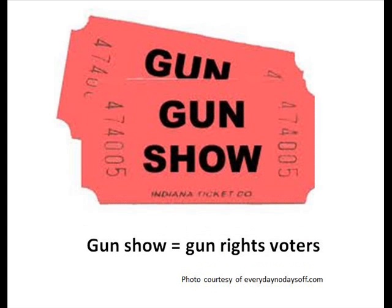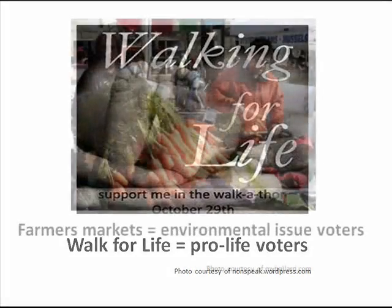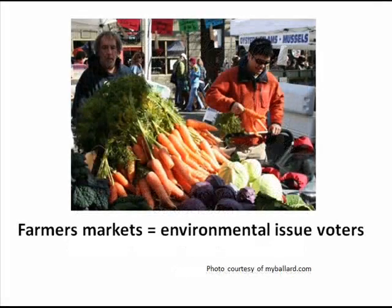To find these voters, think creatively about where your single issue voter is likely to be found. Gun shops and shooting ranges would be a good place to find those passionate about gun rights. Fundraisers for crisis pregnancy centers would be a great place to find pro-life voters. Farmers markets would be a good place to target environmental voters.